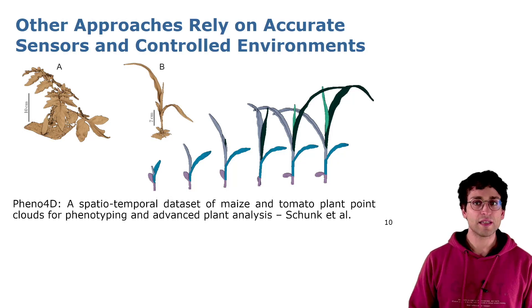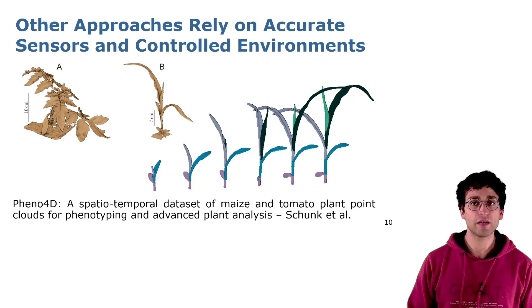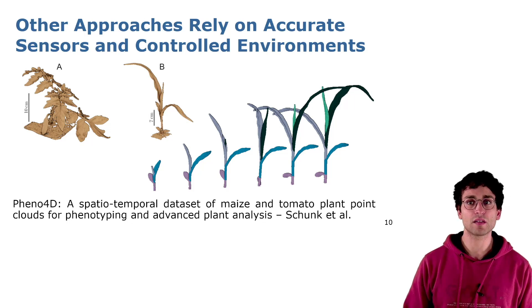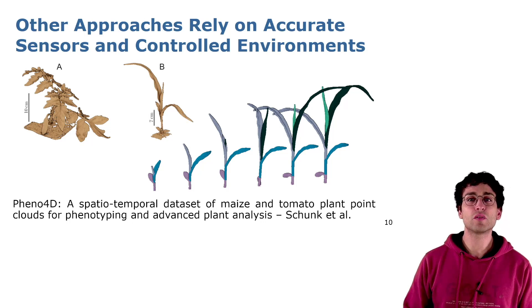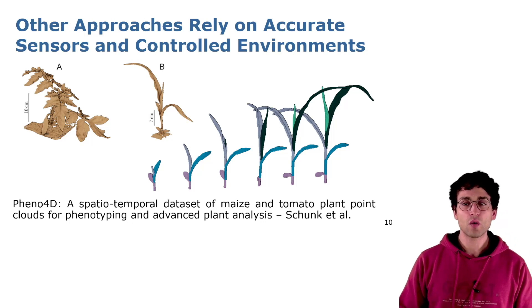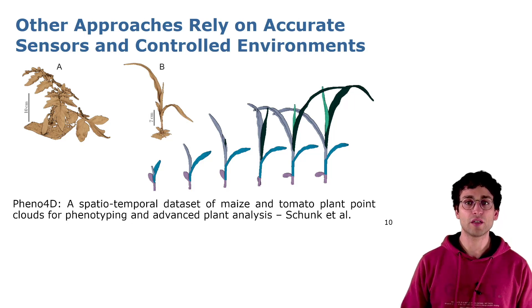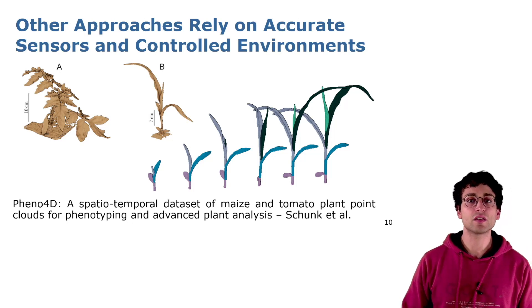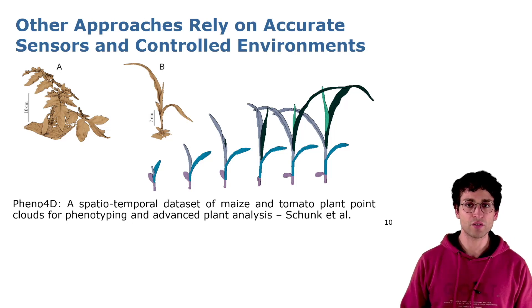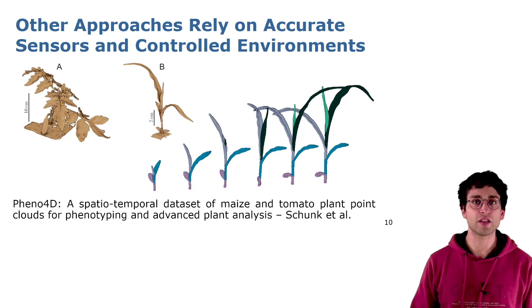Other approaches in literature already investigated the tracking of plants' evolution. Nevertheless, all of them rely on highly accurate sensors and models. To produce such accurate models, we need to work in controlled environments with the possibility to intrusively remove plants in order to measure them. Furthermore, they rely on single plants and it is not possible to adapt these systems to wide scenarios without modification of the environment.